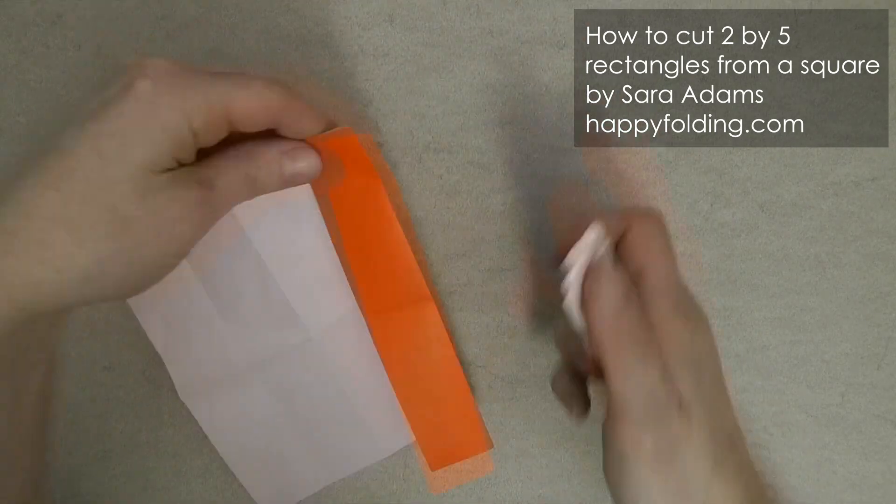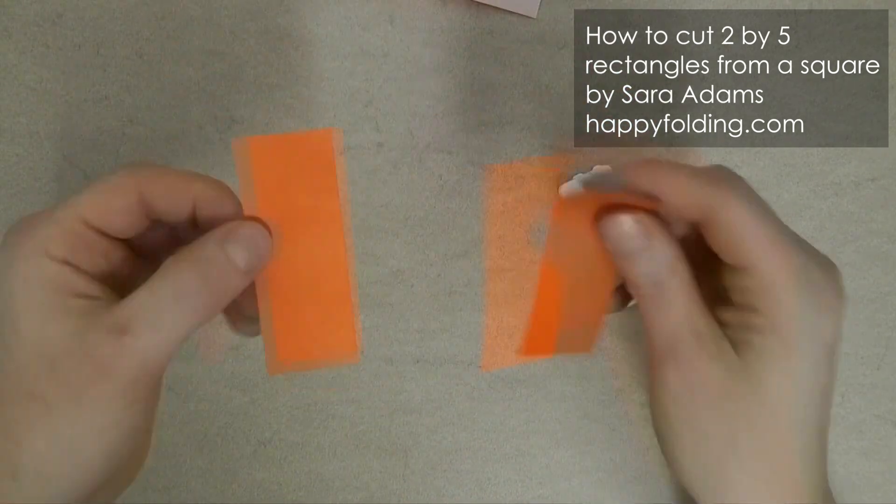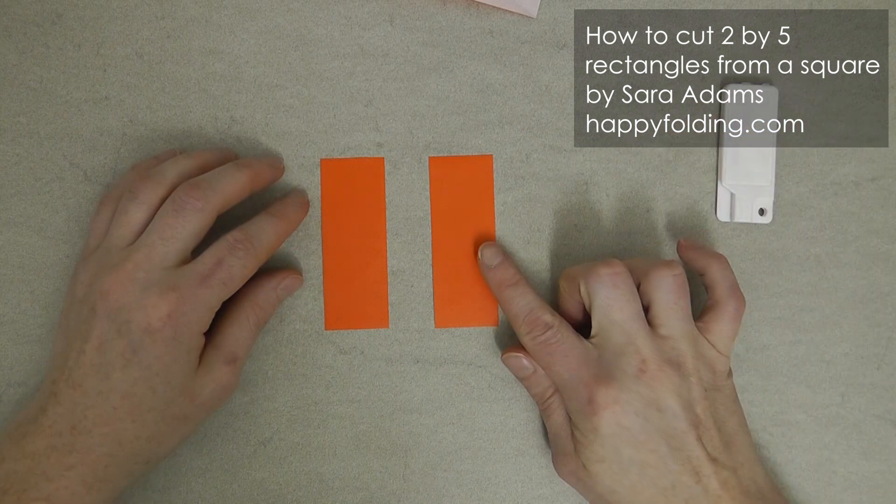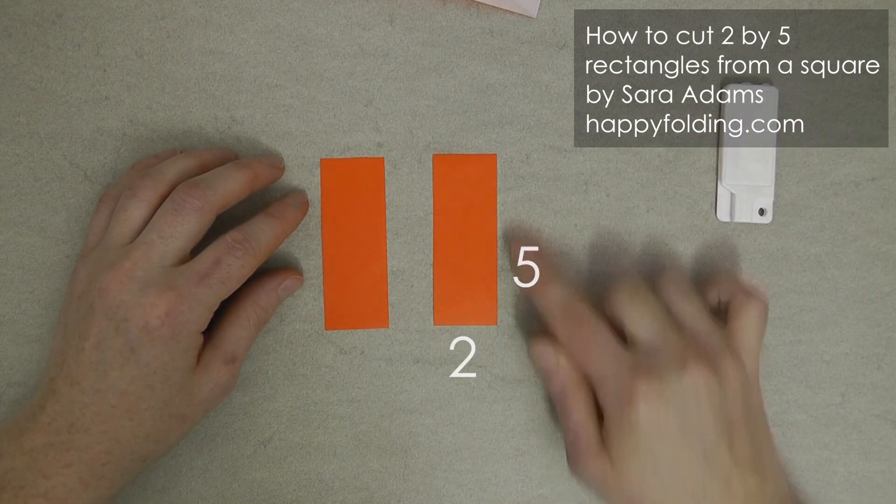So now you can cut along all of the crease lines. And you have rectangles with a ratio of 2 by 5.